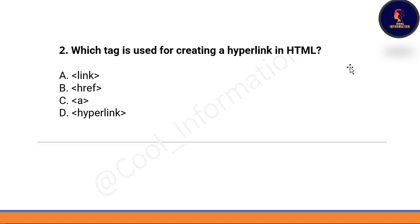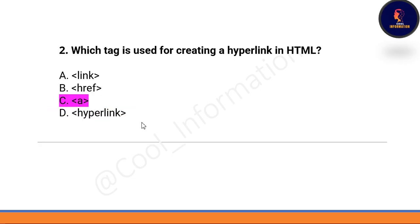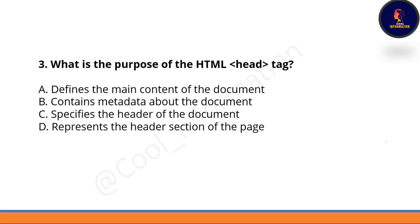The next question: which tag is used for creating a hyperlink in HTML? Options include the link tag, href tag, anchor tag, and hyperlink. The correct option is option A — the anchor tag, also called the 'a' tag, is used for creating a hyperlink in HTML.